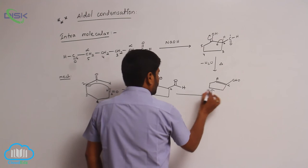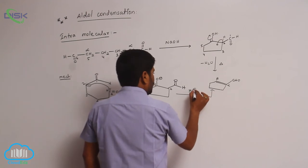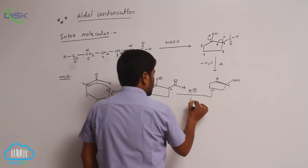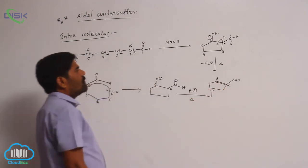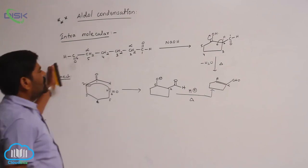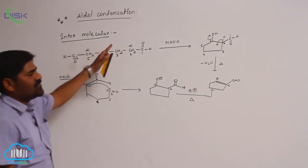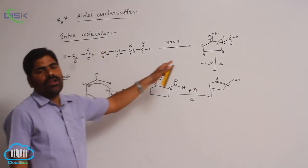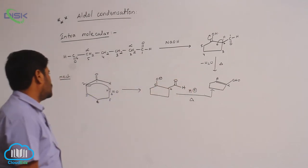Hydrolysis followed by heating gives this compound. This particular type of reaction is known as intramolecular aldol condensation, meaning the same molecule contains two carbonyl groups, which may be an aldehyde or a ketone — this is the first example.